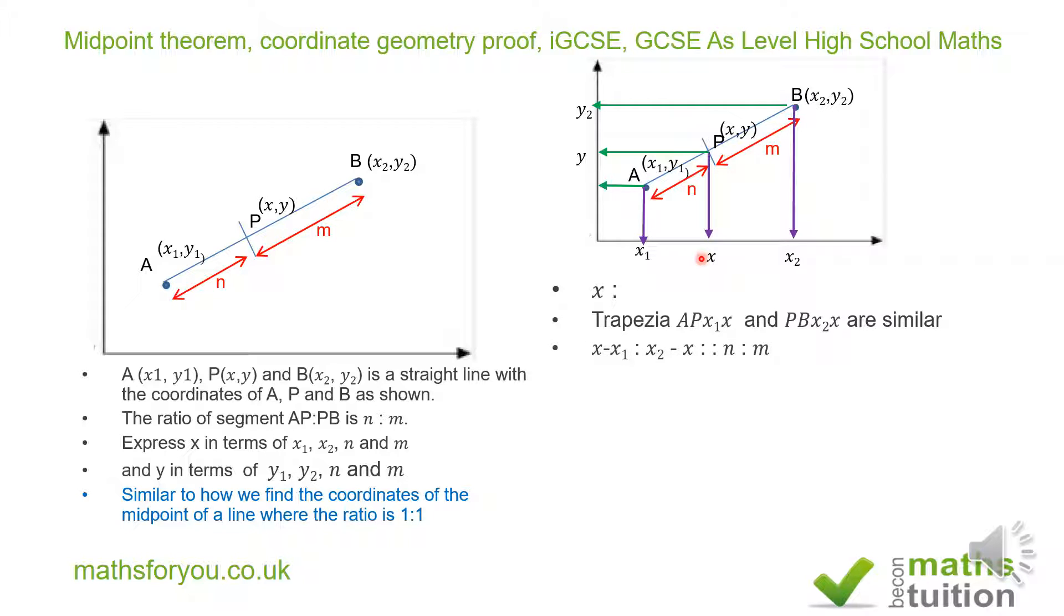So that being the case, we can now say that the ratio of x minus x sub 1 to x sub 2 minus x is the same as the ratio of n to m. Now we can do some fractions. If we then say that x minus x sub 1 divided by x sub 2 minus x is equal to n over m. If we then cross multiply, we then have that m into x minus x sub 1 is equal to n into x sub 2 minus x.